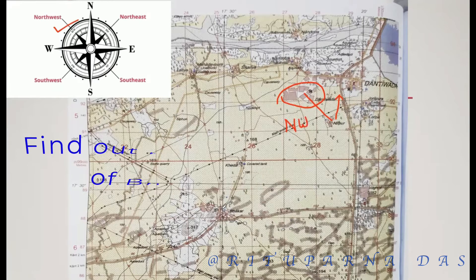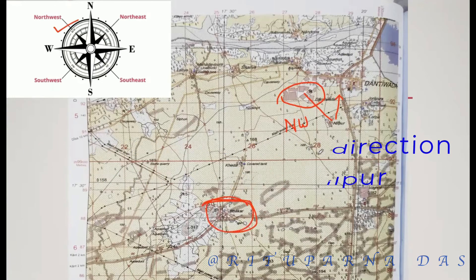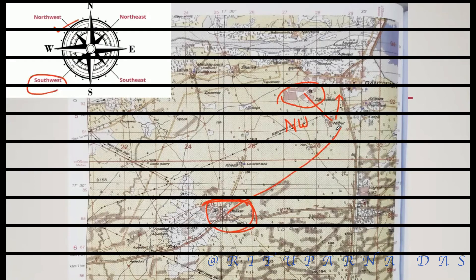In the same way, find the location of Fakar from Nilpur. Again, we draw the north line here — the north line is already there. Now if we join these two places, we can easily find that the village Fakar is situated southwest from the village Nilpur. It's that simple.